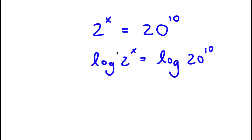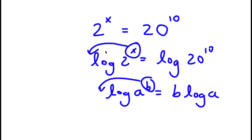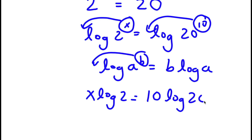Now, if I have something in the form log a to the power of b, I can move this exponent b to the front, so this is going to equal b times log a. So in this case, log 2 to the power of x — I can move x to the front — and log 20 to the power of 10 — I can move 10 to the front. So now I have x times log 2 is equal to 10 times log 20.